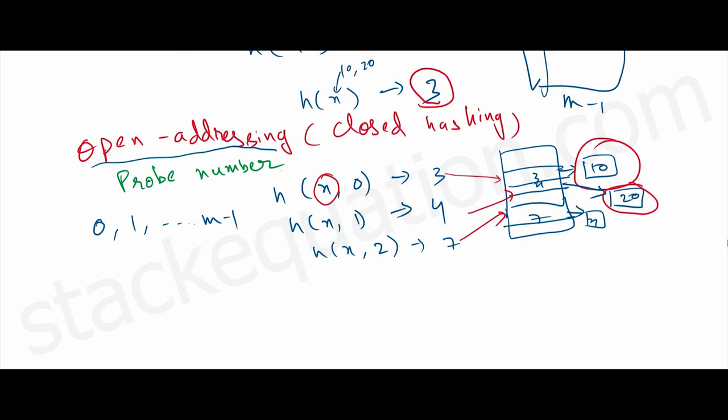It can go from 0 to m-1, where m is the number of indices in the hash table.